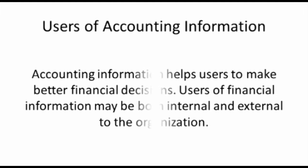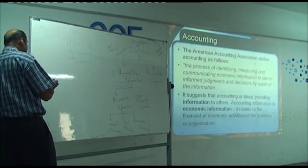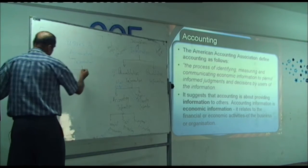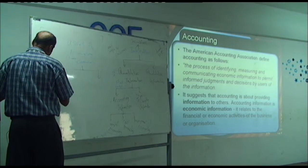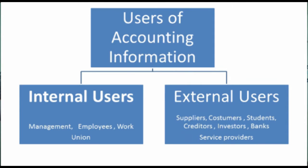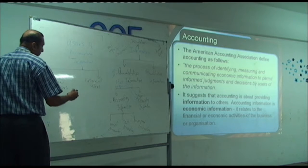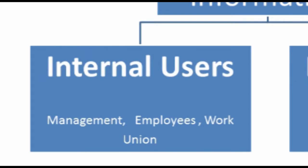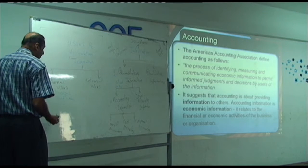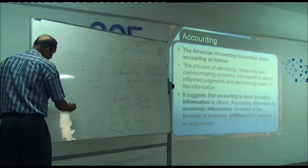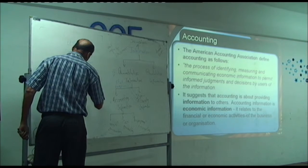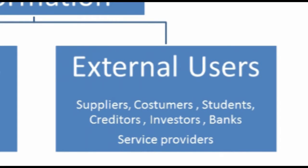Accounting information relates to monetary terms, and users of accounting information are of two types: internal users and external users. Internal users include managers, work unions, and employees inside the organization.